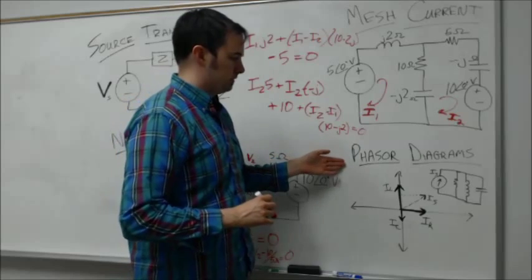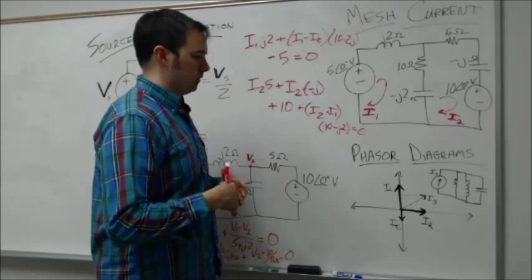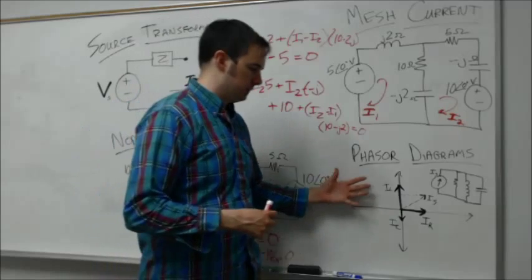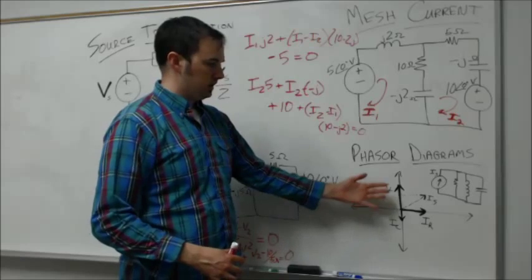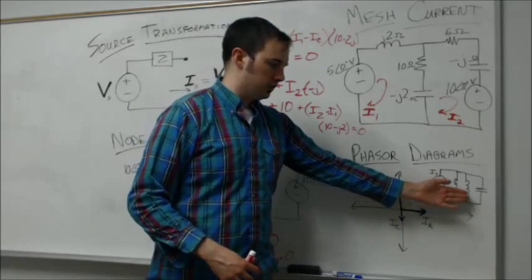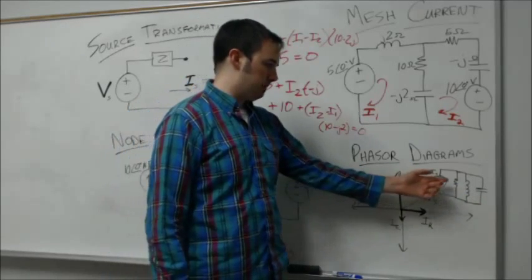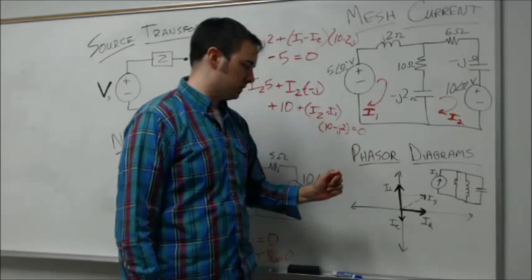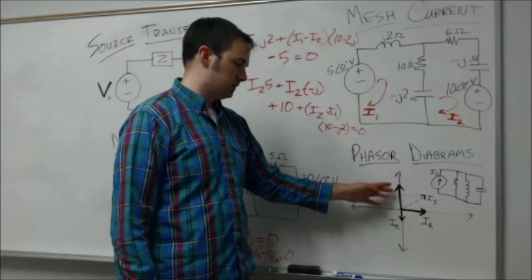The final topic was using phasor diagrams, reminding you of how complex quantities are viewed on figures. We talked about indicating a way to visualize the given phasors for a parallel RLC circuit with a current source, mapping out the currents through the resistor, inductor, and capacitor with their angle and relative magnitude.